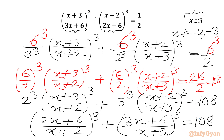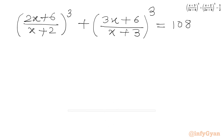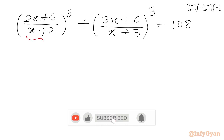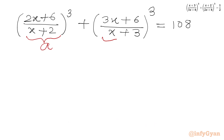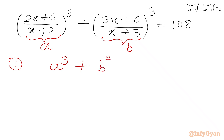Now this is our equation. We can use substitution. Let me call the first expression a, and the second bracket b. So the first equation we can write is a cubed plus b cubed equal to 108.